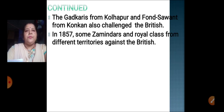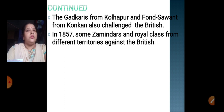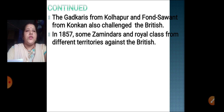Not only the tribal people — even the Gadkaris from Kolhapur and the Phonsavan from the Konkan also challenged the British. Even the Zamindars and royal class were against the British and did not support them. So all these were the people who went against the British. This was the part we had already learned in the previous lecture.